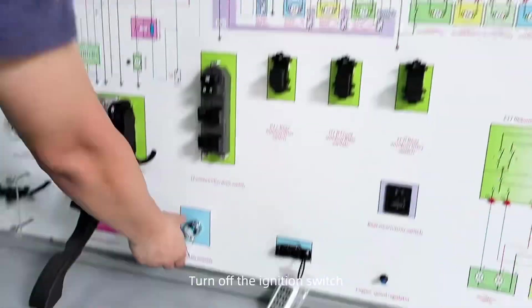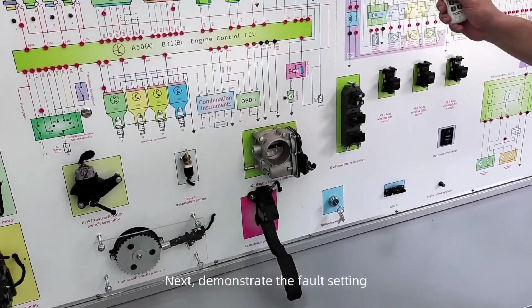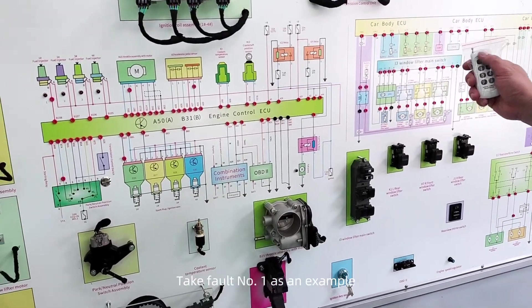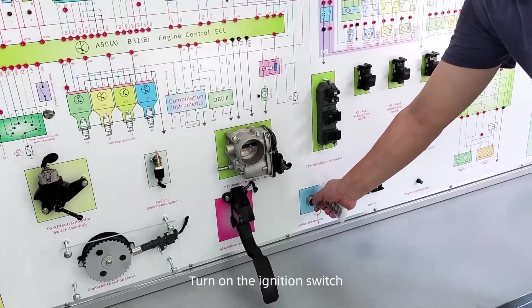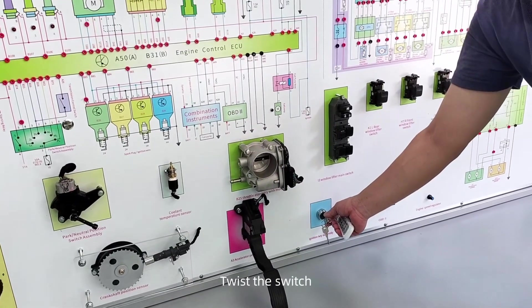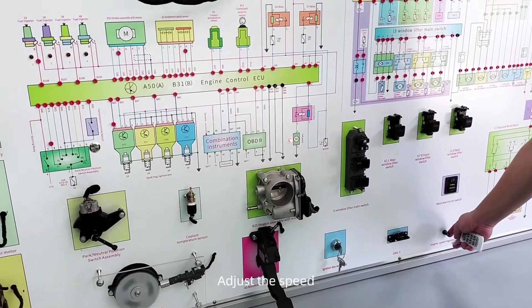Turn off the ignition switch. Next, demonstrate the fault setting. Take fault number 1 as an example, corresponding to the panel here. Turn on the ignition switch. Twist the switch. Adjust the speed.